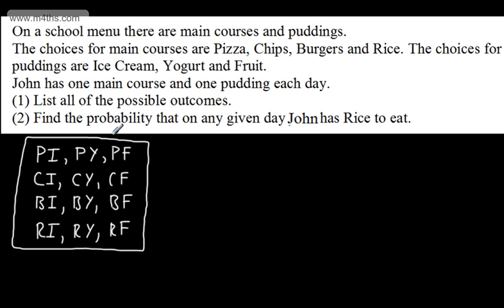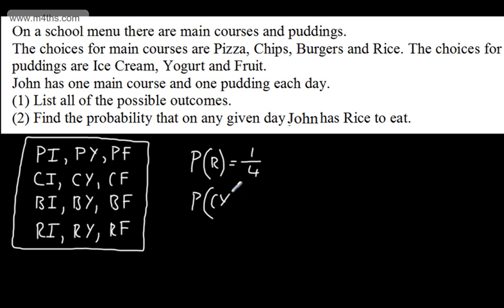For the second part: find the probability that on any given day John has rice to eat. This is an event. We can see there are three rice outcomes out of 12 total, so that's one out of four, or 0.25. If I asked what's the probability that John has chips and yoghurt, there is one of those out of 12, so the probability is one out of 12. This is the systematic way of listing all combinations.